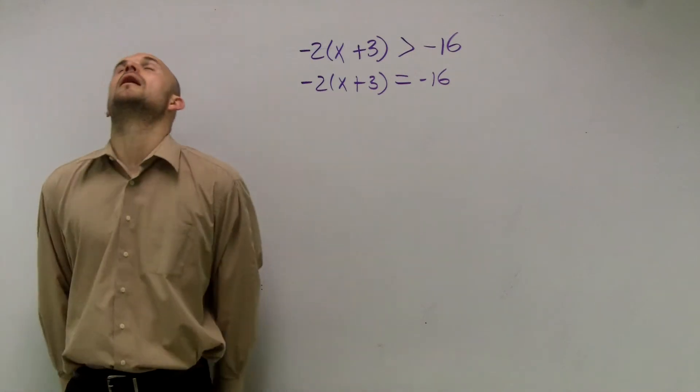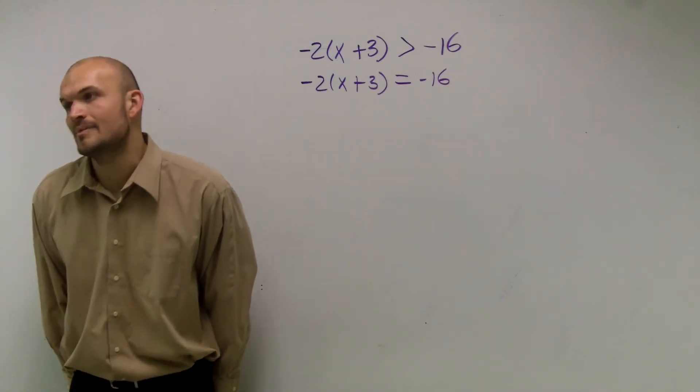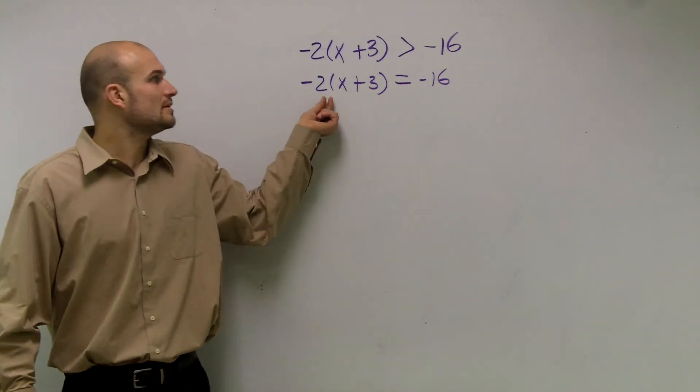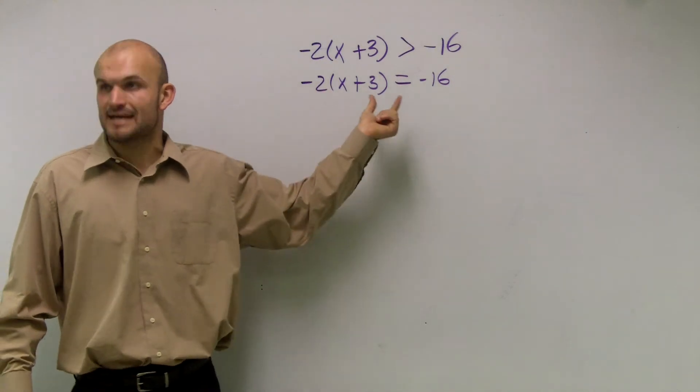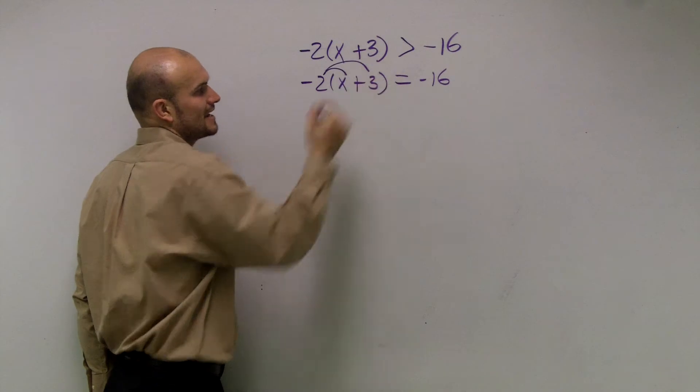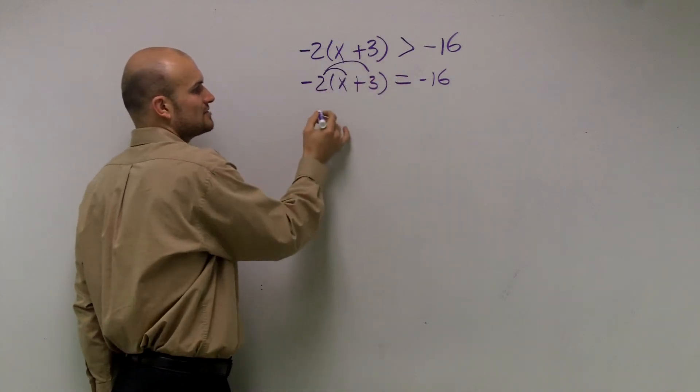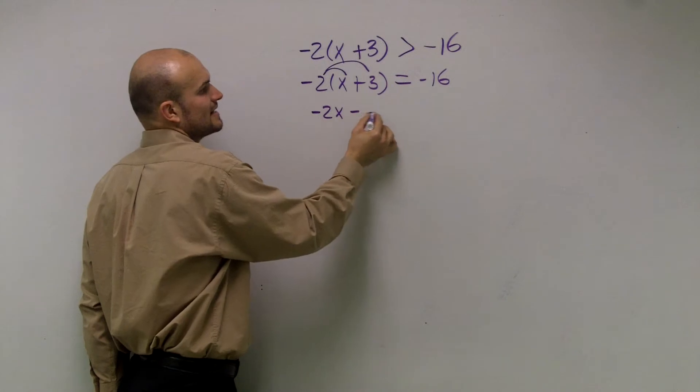Please remember the distributive property. When you have a number outside parentheses, it multiplies everything inside. So negative 2 times x and negative 2 times 3 gives us negative 2x and negative 6.